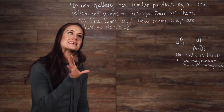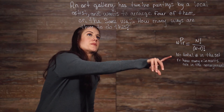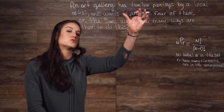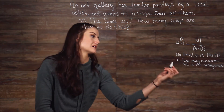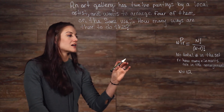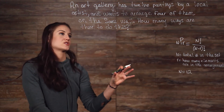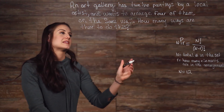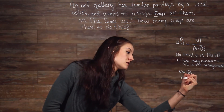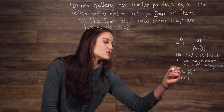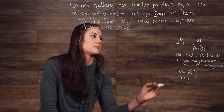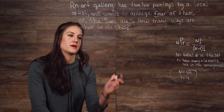So in this case, if n is the total number in our set, then n is equal to 12 paintings. We have n, and if r is how many elements are in the arrangements, then r is equal to 4. And this is all the information we need to apply in our formula.